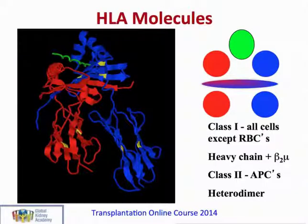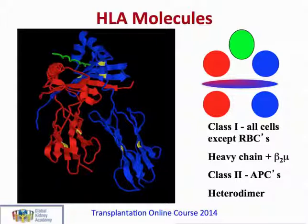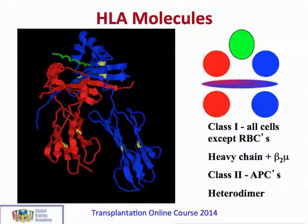Experiments in the 1960s showed that these lymphocytes were being stimulated by HLA molecules. There are two main types of HLA molecule: class 1 molecules, which consist of a heavy chain and beta-2 microglobulin, and are present on all nucleated blood cells — importantly, they are not present on red blood cells. Class 2 HLA molecules consist of two different dimers, an alpha and a beta protein, and are present mainly on antigen presenting cells, but also on some other cells.